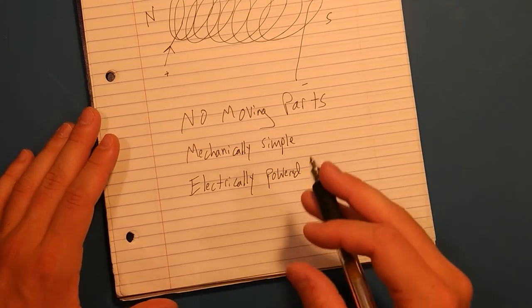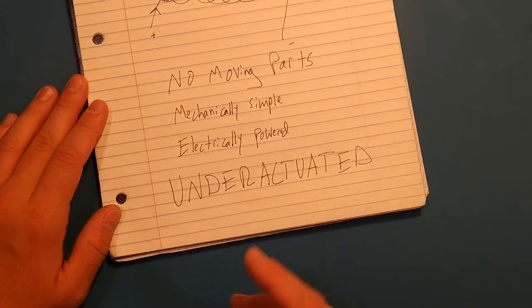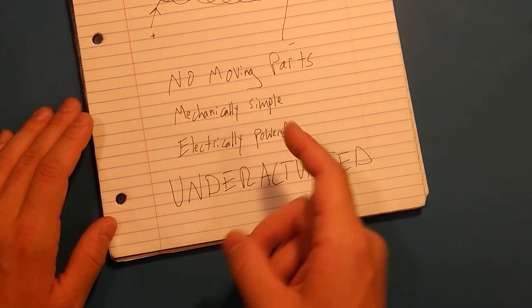However, there are certainly some problems with magnetorquers. Specifically, they result in a control system that is underactuated. And I'll show you what that is.